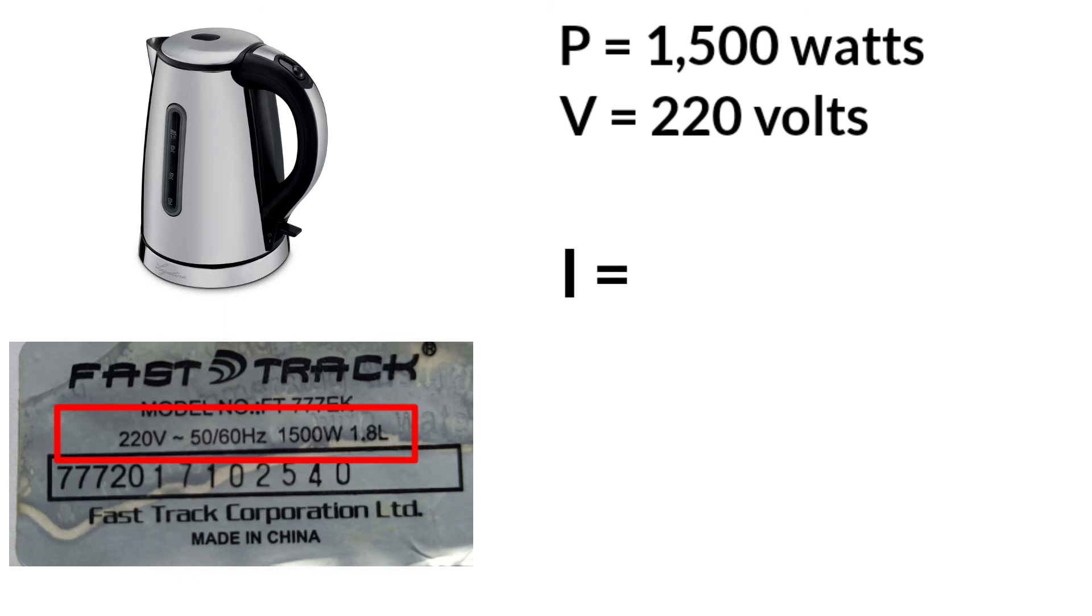According to Ohm's law, if you are looking for current or ampere, power divided by voltage is equal to ampere. So 1500 watts divided by 220 equals 6.81.